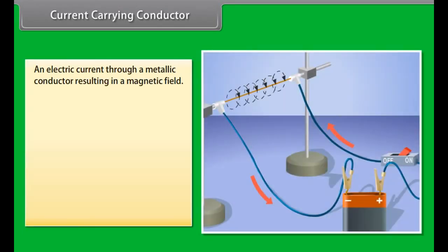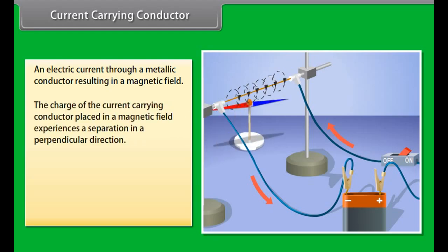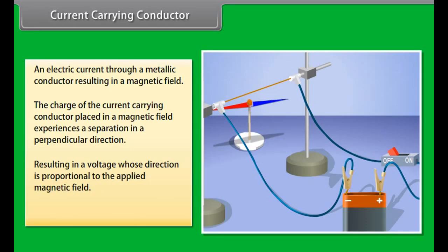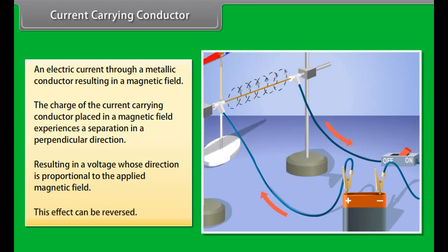Current-carrying conductor. An electric current passing through a metallic conductor results in a magnetic field being created around it. The charge of the current-carrying conductor placed in a magnetic field experiences a separation in a direction that is perpendicular to the current and the magnetic field. This results in a voltage whose direction is proportional to the applied magnetic field. This effect can also be reversed.